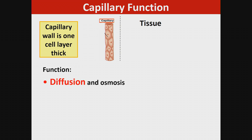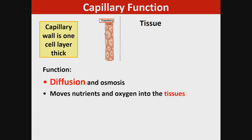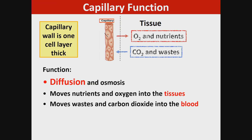Capillaries are one cell thick to allow for diffusion and osmosis. Nutrients and oxygen move into the tissues and carbon dioxide moves into the blood. From the capillary, oxygen and nutrients travel to the tissue, and carbon dioxide and waste travel from the tissue back into the capillary.